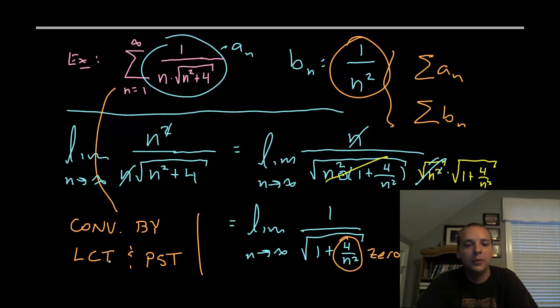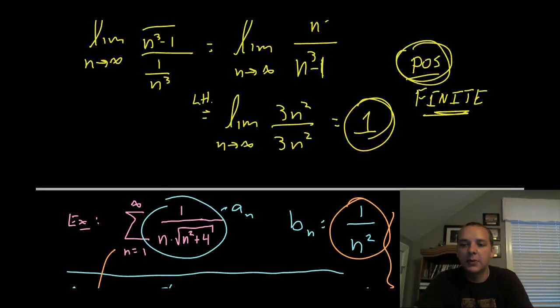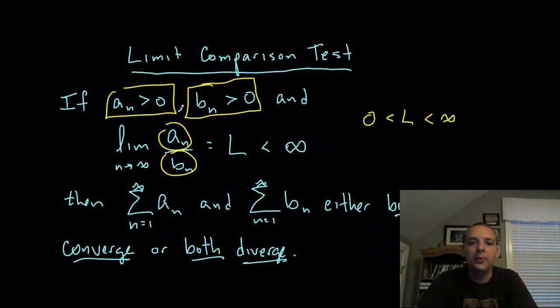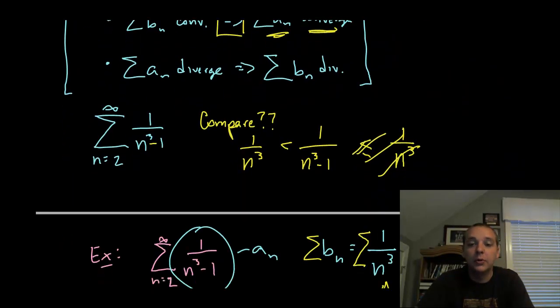So pardon my abbreviations there, just running out of space. But anyway, that's two good examples of the limit comparison test. Personal preference, I prefer this comparison test much more than the direct comparison test. Again, because you don't have to deal with the inequalities and it works really well.